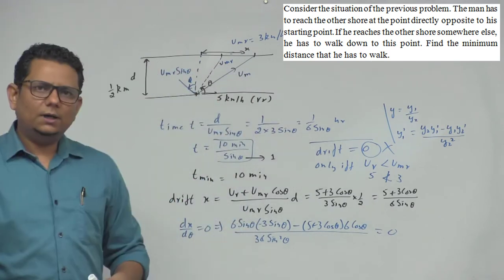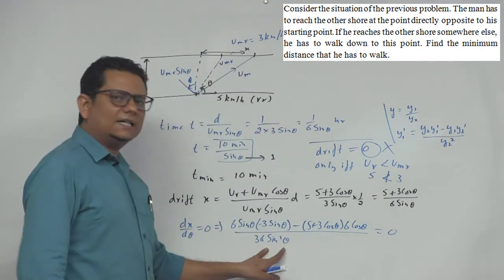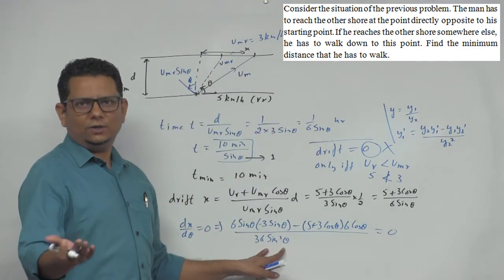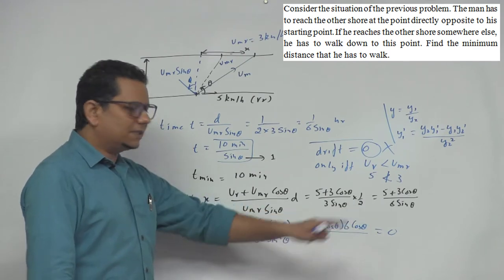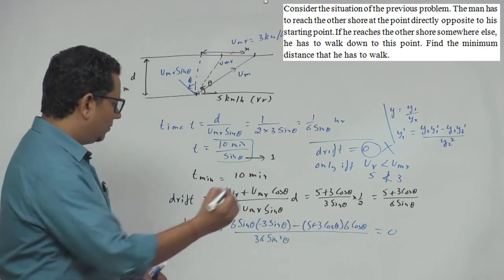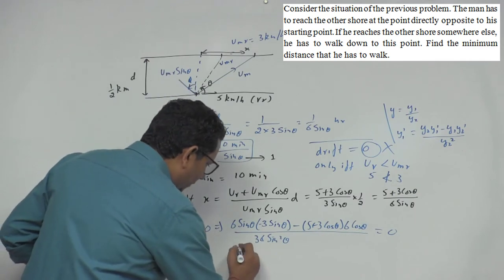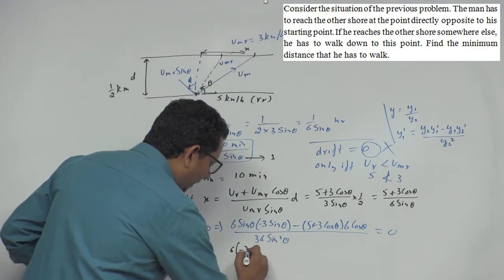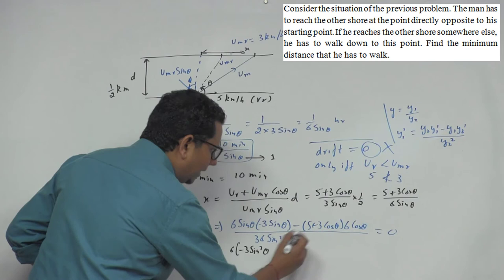Now this will equal 0. If this equals 0, 36 sin square theta cannot be infinite, which is not possible. This means the numerator should equal 0. Now in this case, if we take 6 common, this will become minus 3 sin square theta.